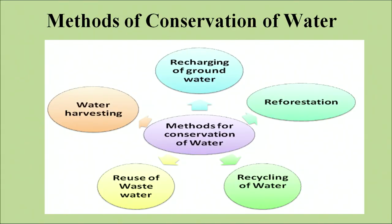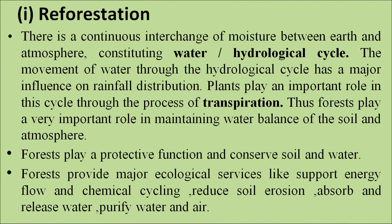Methods of conserving water include: recharging of groundwater, reforestation, recycling of water, reuse of wastewater, and water harvesting. Regarding reforestation — there is a continuous interchange of moisture between earth and atmosphere, constituting the water cycle. Plants play an important role in this cycle through transpiration. Forests play a very important role in maintaining water balance of the soil and the atmosphere, and they also conserve soil and water. Forests provide major ecological services like supporting energy flow, chemical cycling, reducing soil erosion, and absorbing and releasing water.